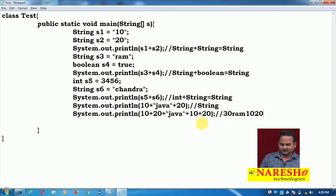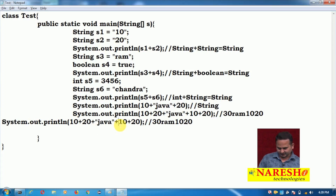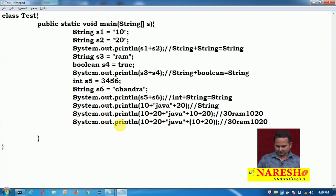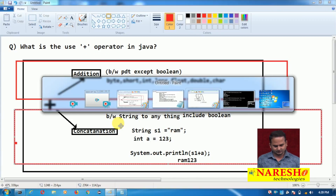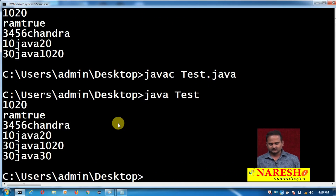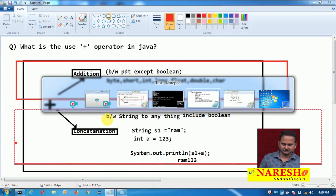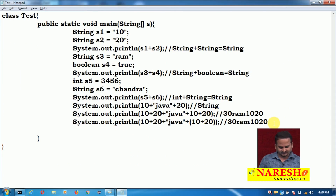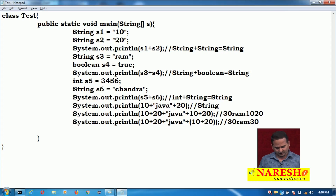If you want to print "30java30" instead, simply we need to place the last data into separate parentheses — applying parentheses on top of 10 plus 20 at the end. Now see the output — we are getting "30java30". So these are a few examples related to whether the plus operator is doing concatenation or arithmetic addition.